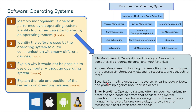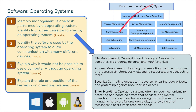Security: controlling access to the system, who can log on, ensuring data privacy and protecting against unauthorized access. And finally, error handling - operating systems often include mechanisms for detecting and handling errors that occur during system operations. This could involve recovering from software crashes, managing hardware failures gracefully, or providing error messages to users when problems occur. So that's question one - four marks. If you listed any of these four things, you will pick up the marks.